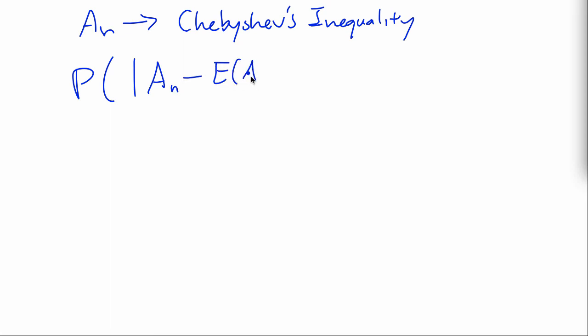So, now, you just need to plug An into Chebyshev's inequality. And this means that the probability that An deviates from its mean for a certain distance is less than